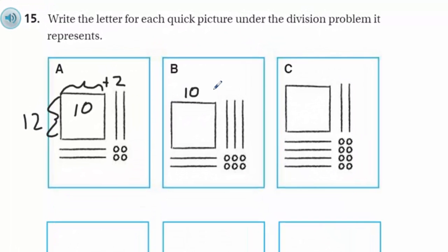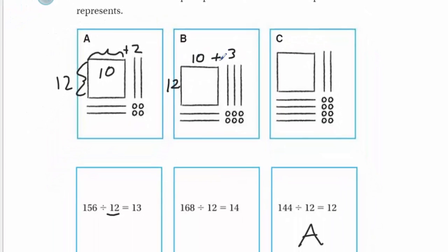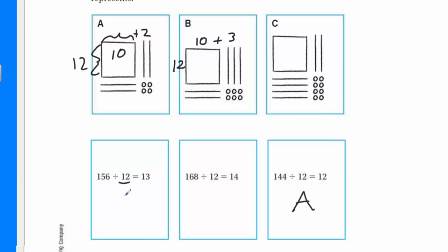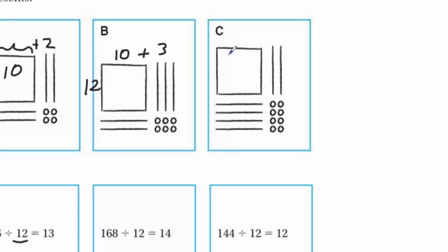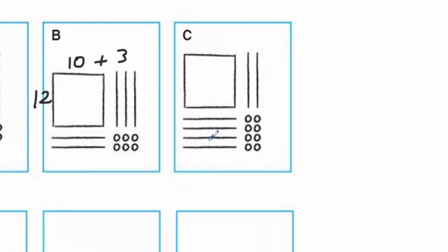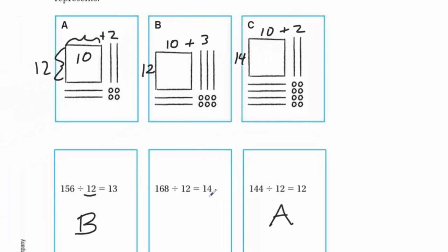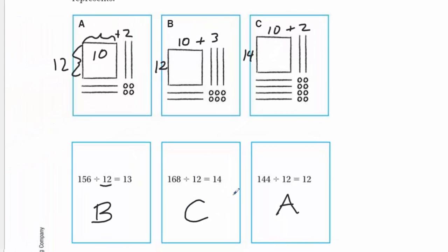Here, same thing. I have 10, plus it looks like three more complete groups. Over here I have 10, and I have 12. So I have 10 groups of 12 and then three groups of 12. That should be B. Now I could just put C for that one, but I really should check. What do we have here? We have 10 rows of 1, 2, 3, 4 — 14. So we have 10 rows of 14 plus two more rows of 14. There you go — 14 and 12. That's my final answer.